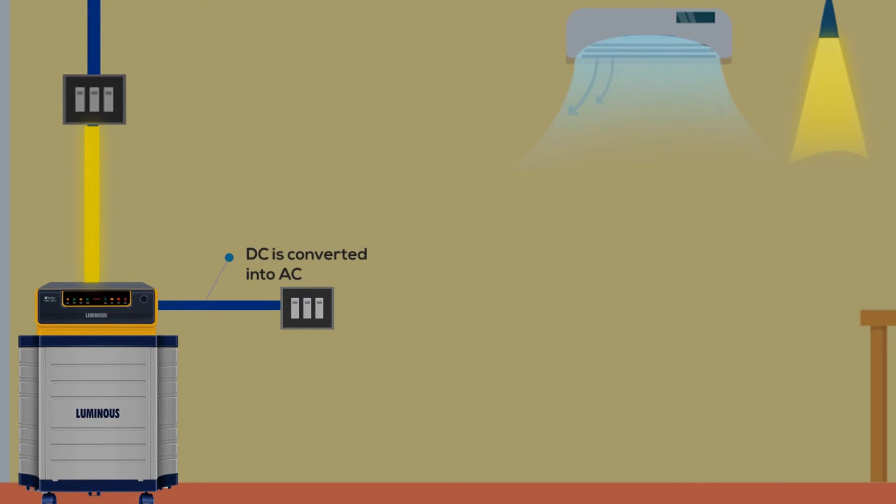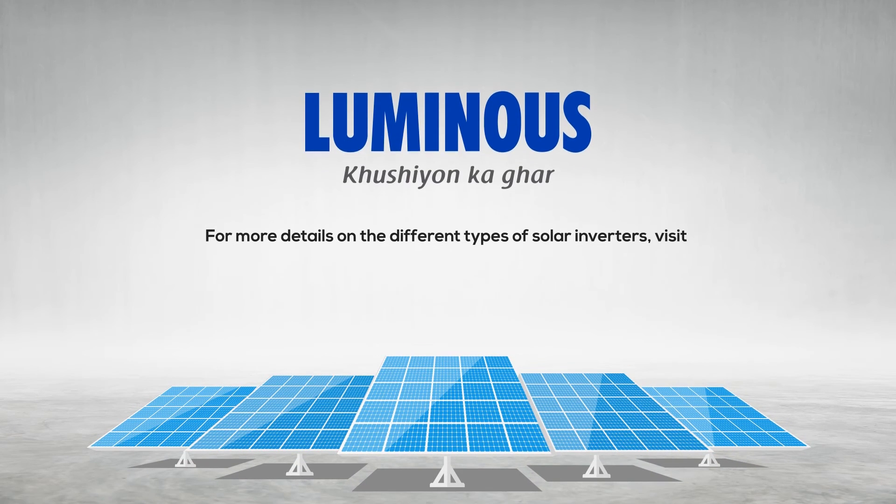The inverter then turns this DC electricity into usable AC or alternating current, which is the electric current that comes from your traditional utility lines. This AC energy can then be used to run electrical loads or household appliances connected to the inverter.